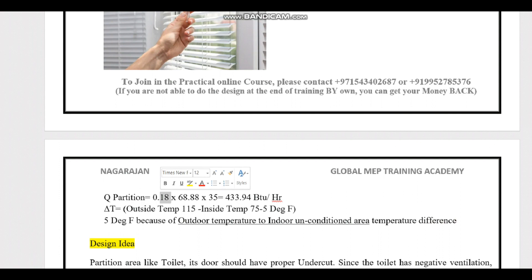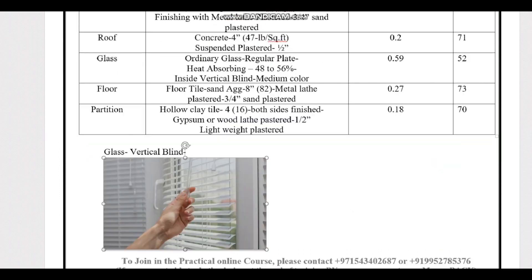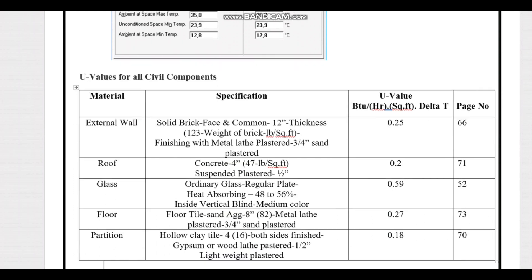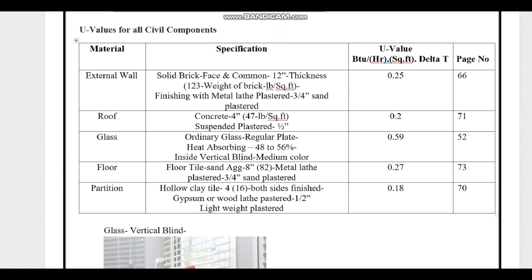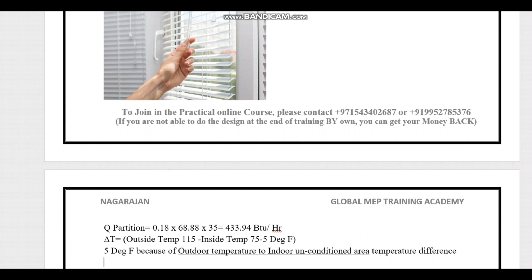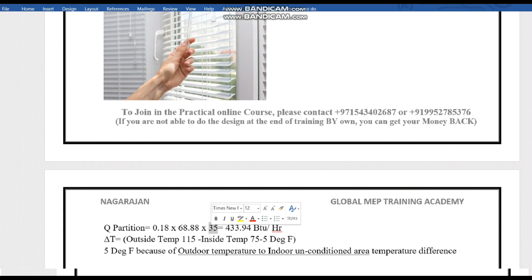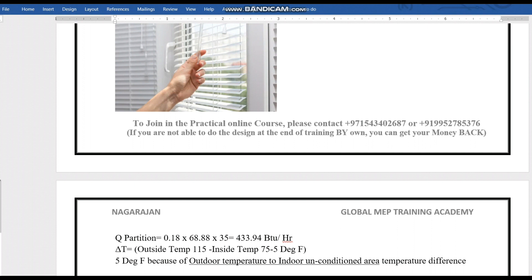Now applying the formula: Q = U × A × ΔT. The U-value for the partition is 0.18, the area is length × height = 68.88, and the Delta T — since the partition is not directly exposed to the sun and is adjacent to a non-AC area — is 115 minus 75 minus 5, giving 35°F. This gives us the Q value for the partition.